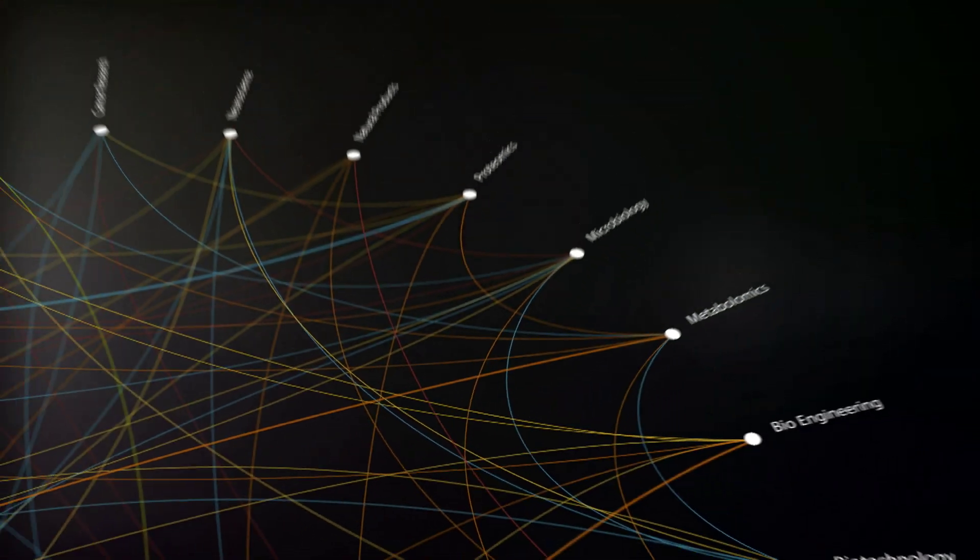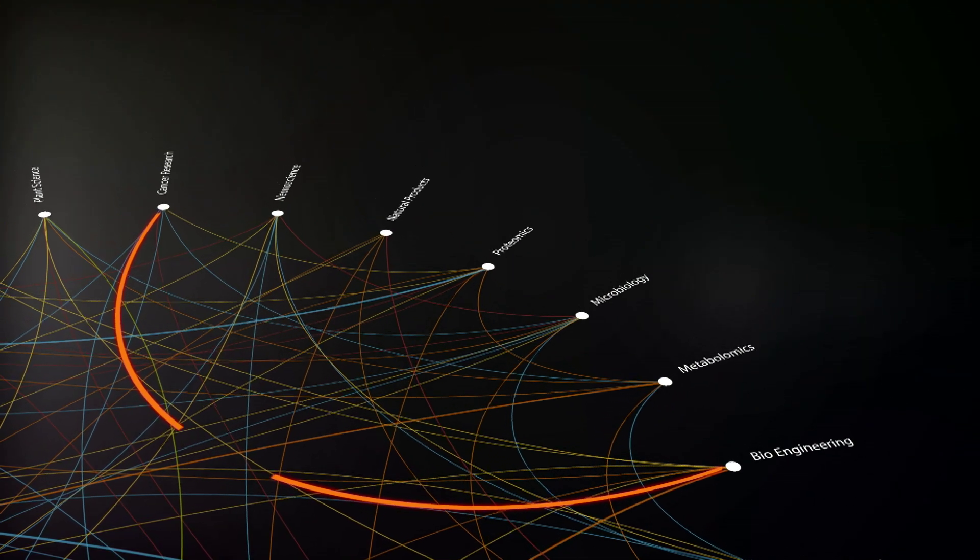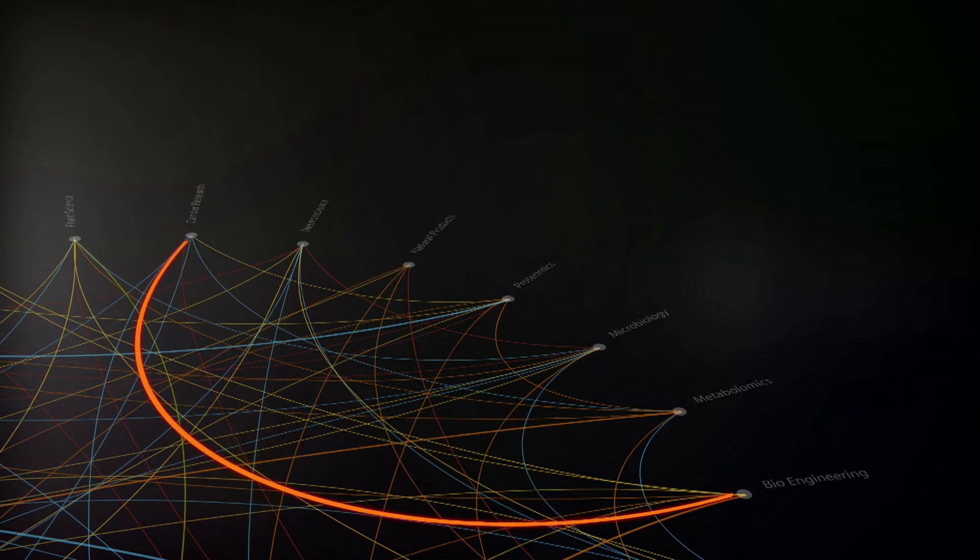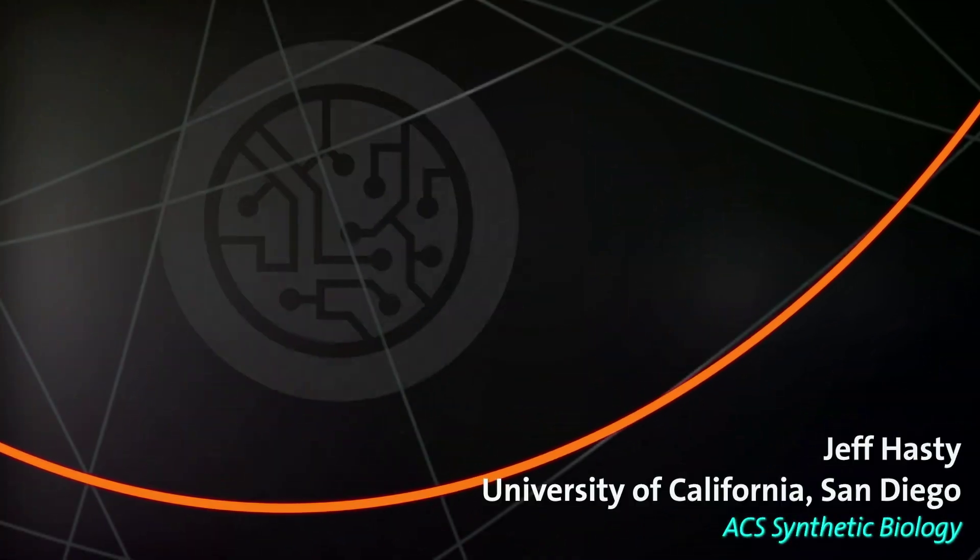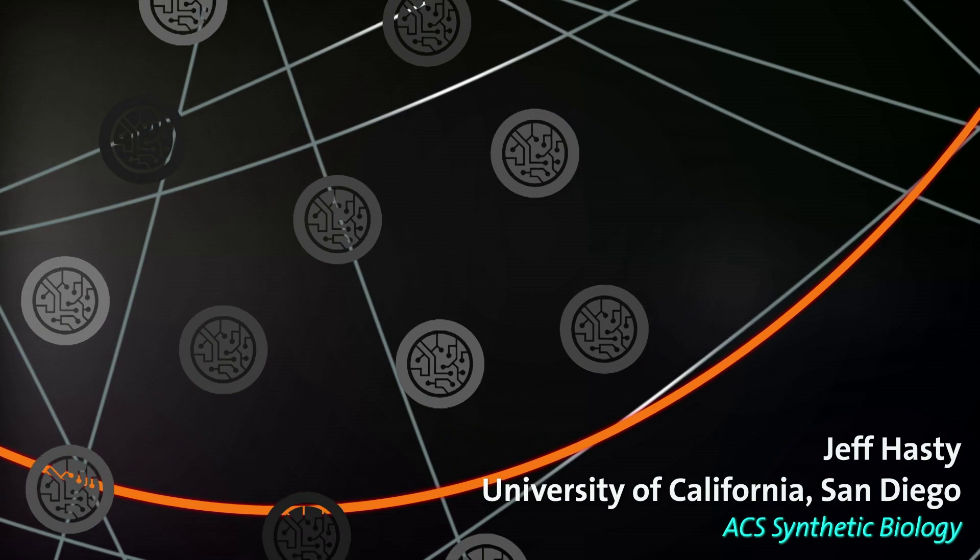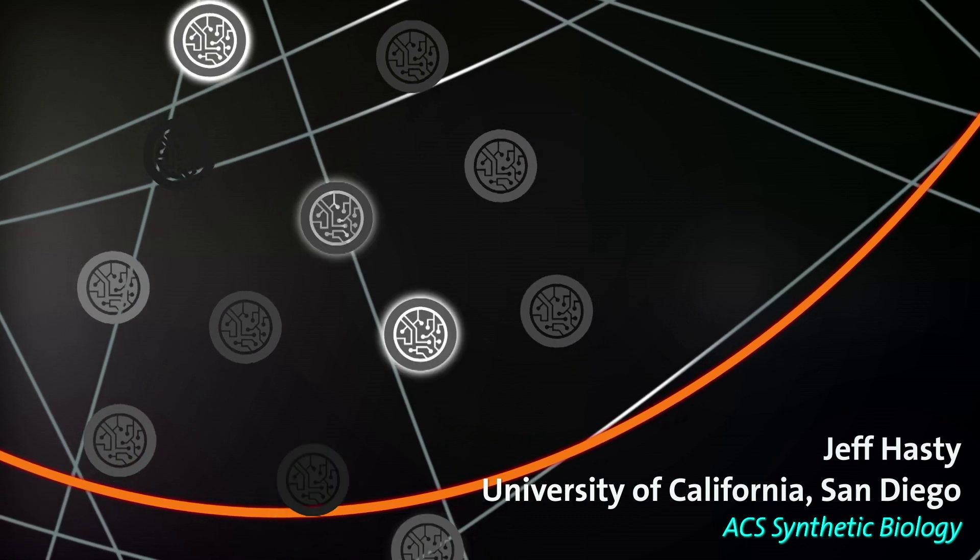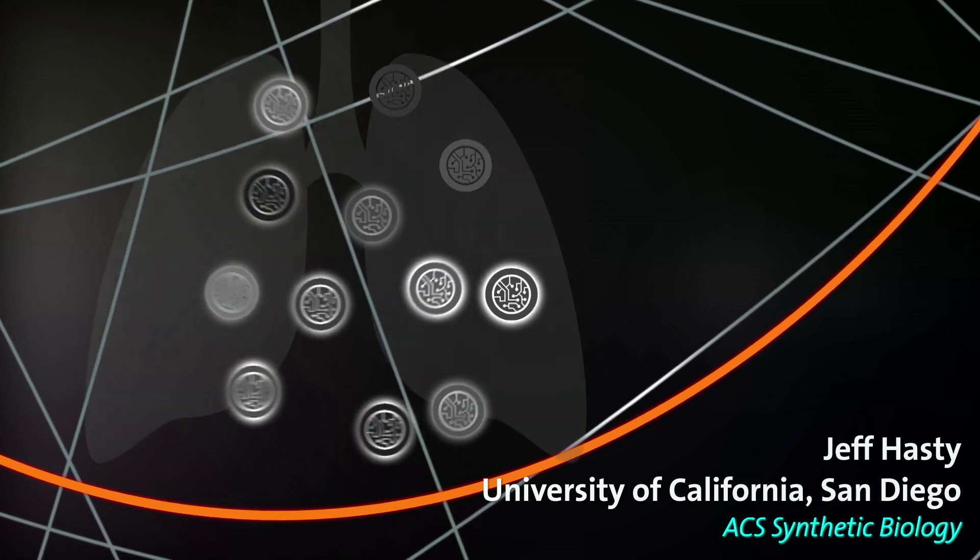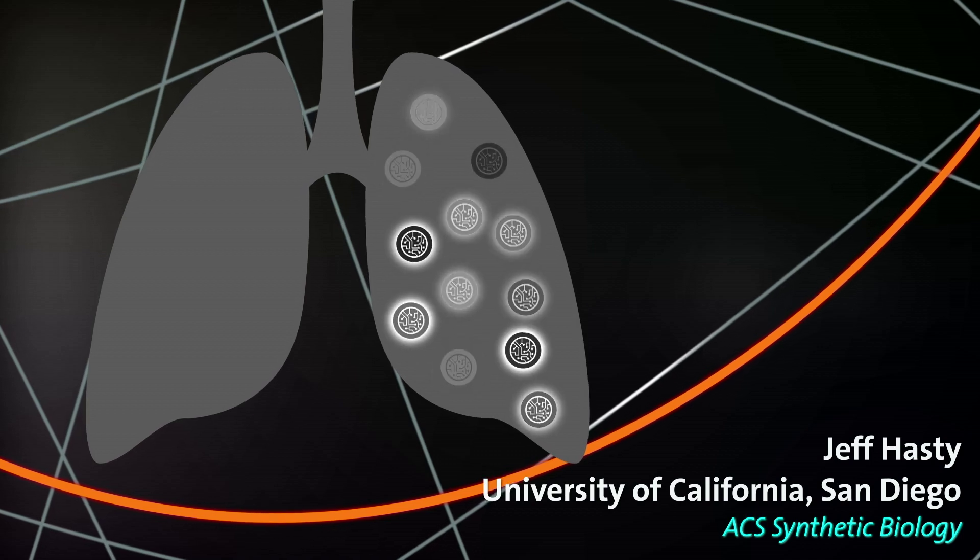At the interface of bioengineering and cancer research, you'll find Jeff Hastie from the University of California, San Diego. His work on genetic oscillators led to the discovery of a microbial host that thrives in tumors. With cancer-targeting delivery systems and controllable genetic circuits, we glimpse a world where drugs are manufactured directly in the tissue where they're needed.